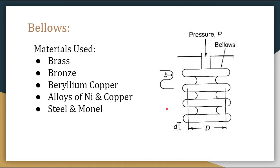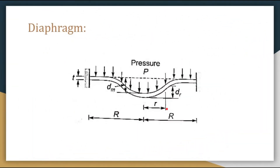The next element is the diaphragm. As you can see in the diagram, the pressure to be measured is applied to the diaphragm causing it to deflect. Before application of pressure, the diaphragm sits along a straight line. When pressure is applied, it deflects and bends downward. The maximum deflection is denoted as dm, and the deflection at any radius is dr, as shown in the diagram.